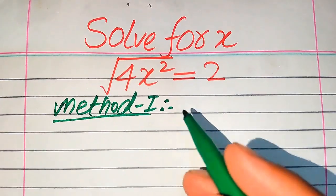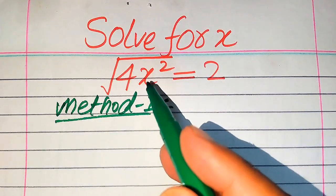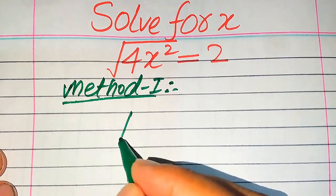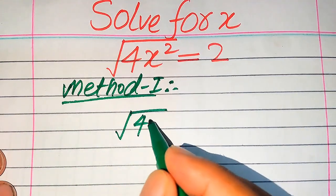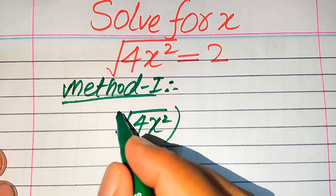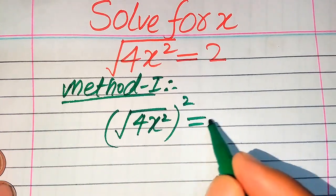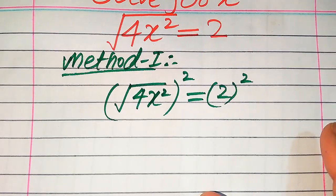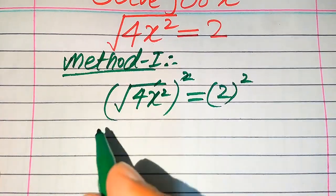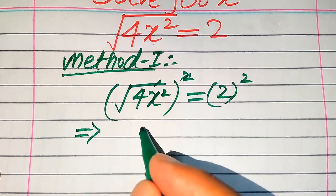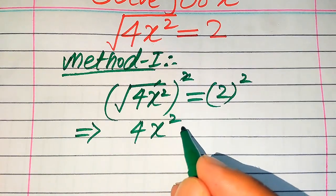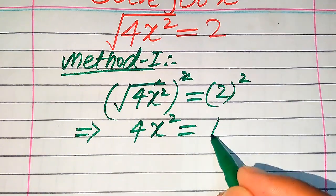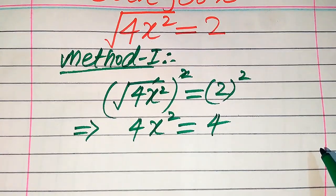In the first method, we just need to remove this radical sign from the left hand side. In order to remove this radical sign we will take squaring on both sides. When we take squaring it will be written in this form, and you see here the square root is gone and we get 4 times x squared equals 2 squared.